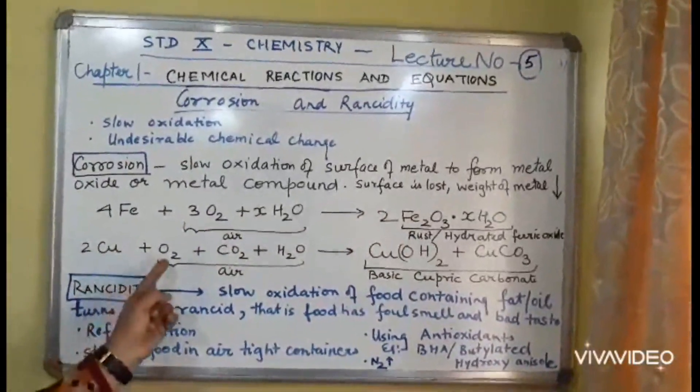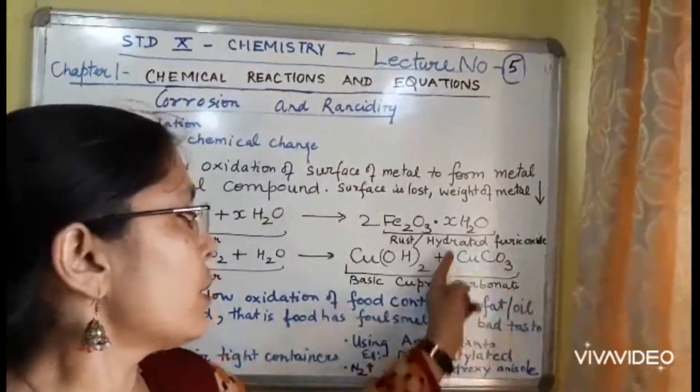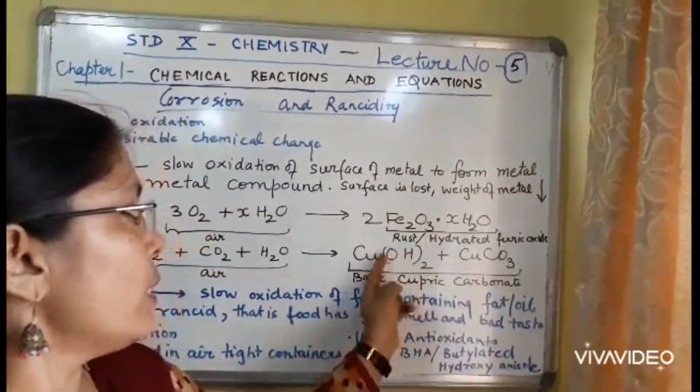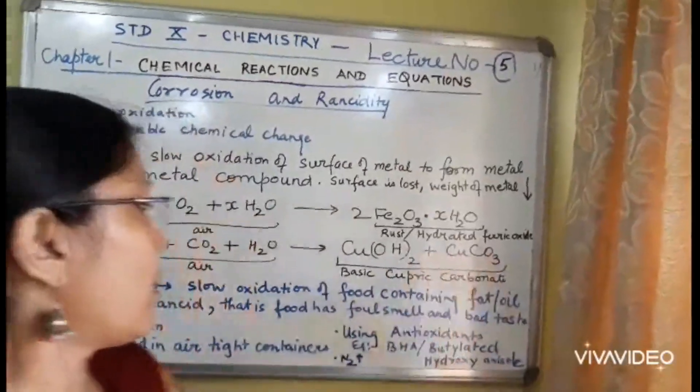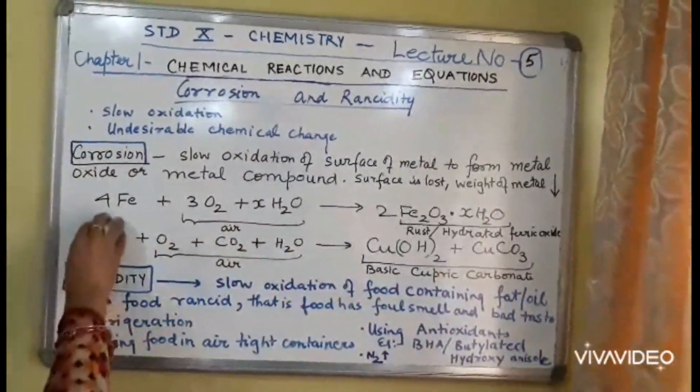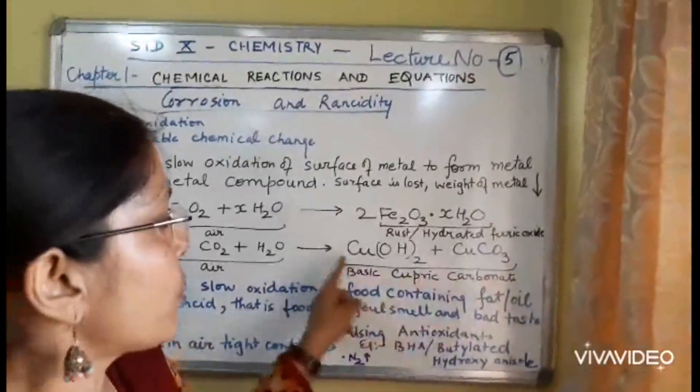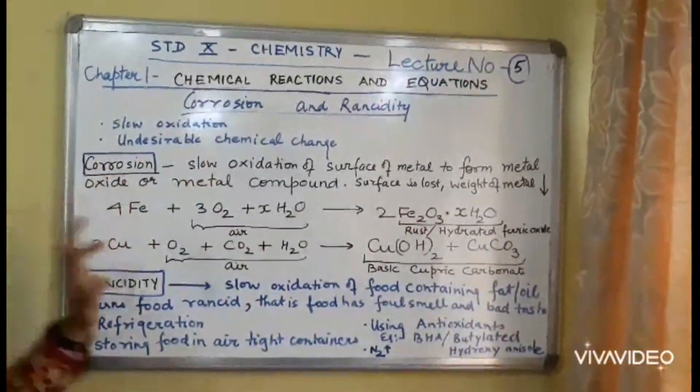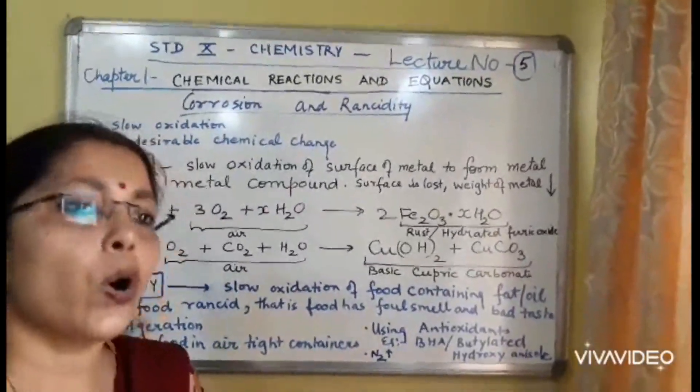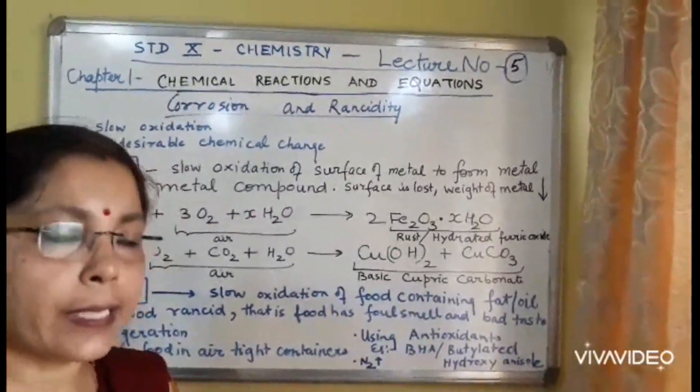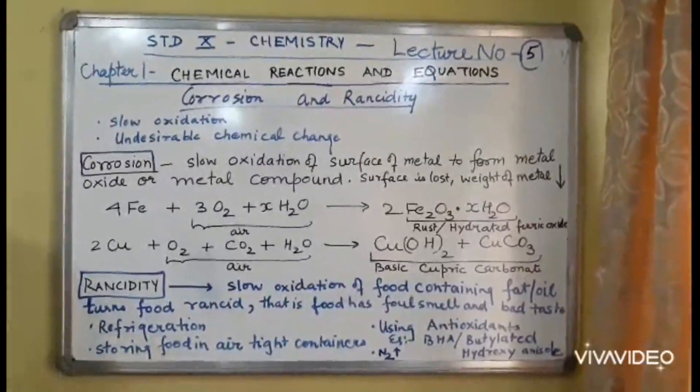Similarly, copper, it reacts with all these components of air to form CuOH2 and CuCO3. CuCO3 is cupric carbonate and OH means a base. So, we write basic cupric carbonate. It is a balanced reaction. Copper, which is reddish brown, if you leave it in air for a long time, it shows a green deposition of this. Iron, which is grey, shows a dark brown deposition of rust. Rust comes out as flakes or powder and the loss of metal, that is iron, occurs. And that is why iron is taken care by painting, galvanizing, etc.